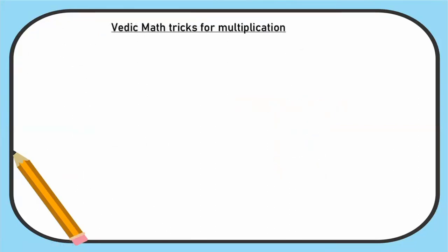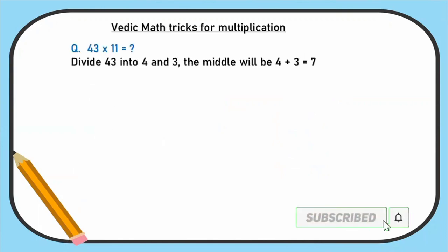The Vedic Math tricks for multiplication. 43 into 11. Divide 43 into 4 and 3. The middle will be 4 plus 3 is equal to 7. So that is middle number is 7. Then left 4 into 1, 4 you can write down. Then middle number is 7, 4 plus 3. Then 3 into 1 is 3. You can write down. So the answer is 473.